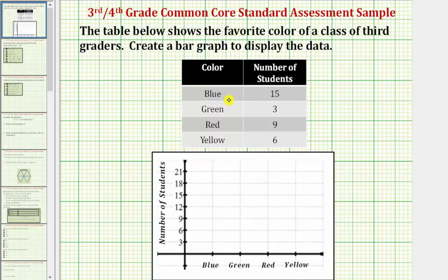So 15 students prefer blue. We're going to make a bar that's 15 units high above blue along the horizontal axis. So here's blue, here's 15. So we'll make the first bar this height to display the data from the table. Notice how this bar shows that 15 students prefer the color blue.